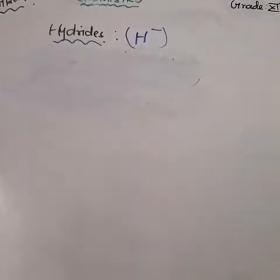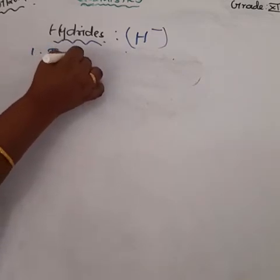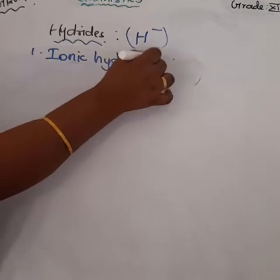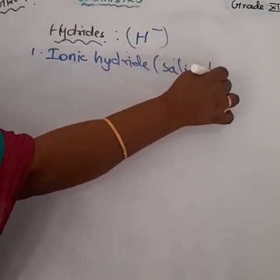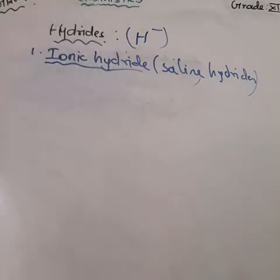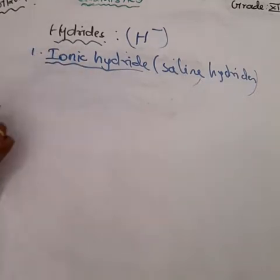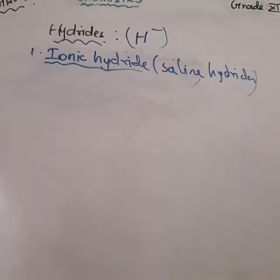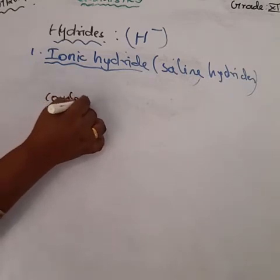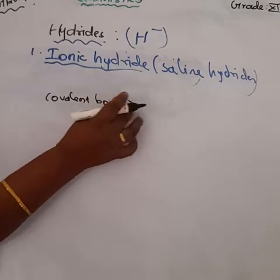The first type is ionic hydrides — otherwise called saline hydrides. Saline hydrides react with water violently, producing fire. In these hydrides, an ionic bond is formed between hydrogen and the other element.